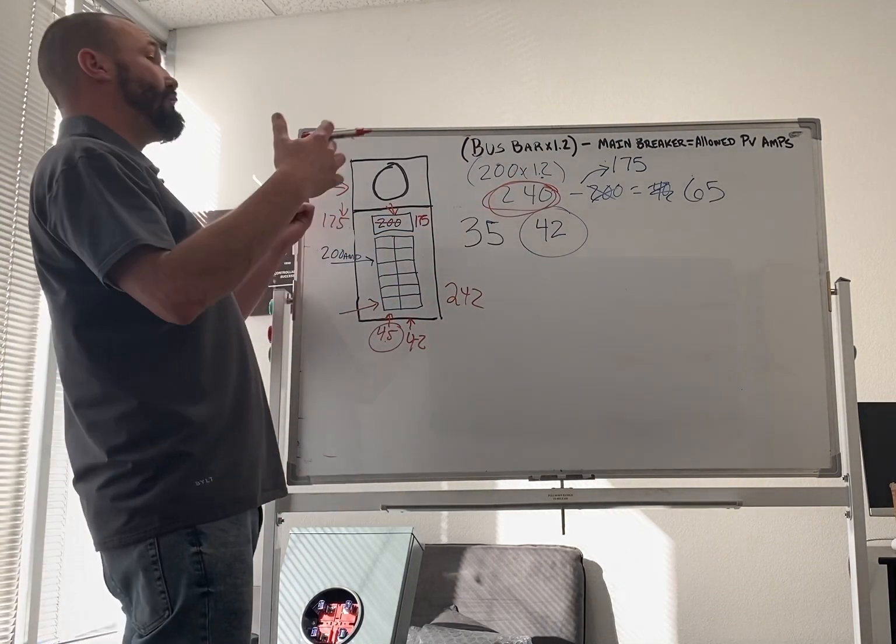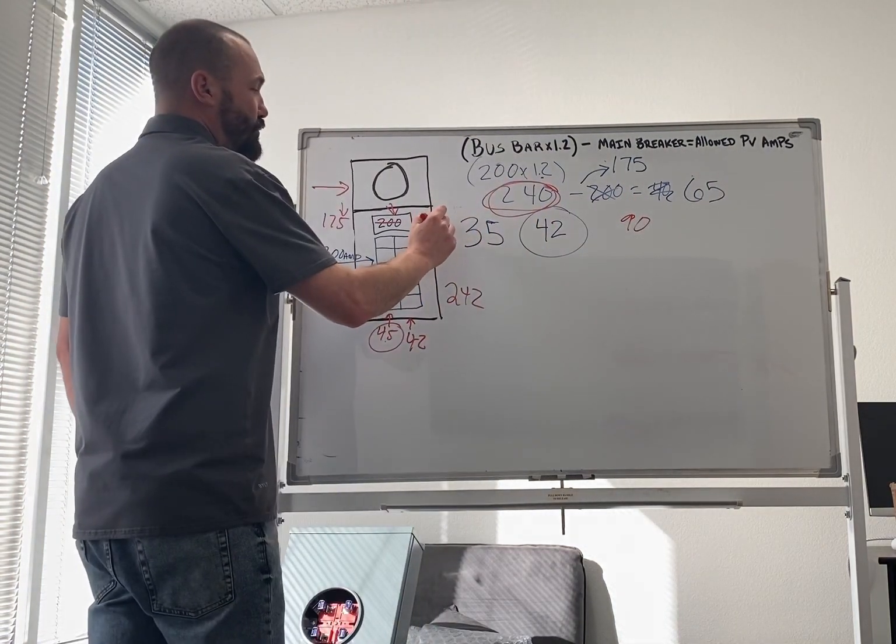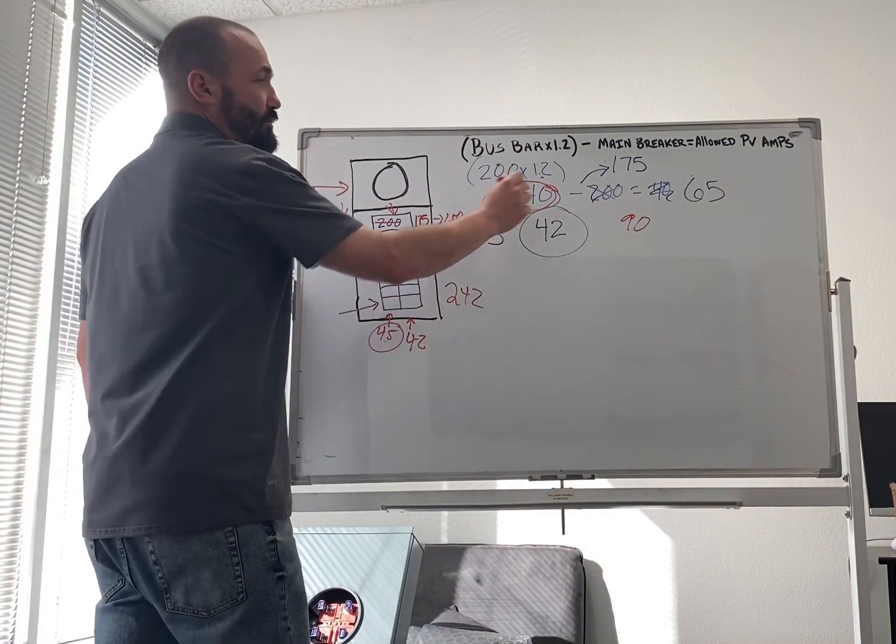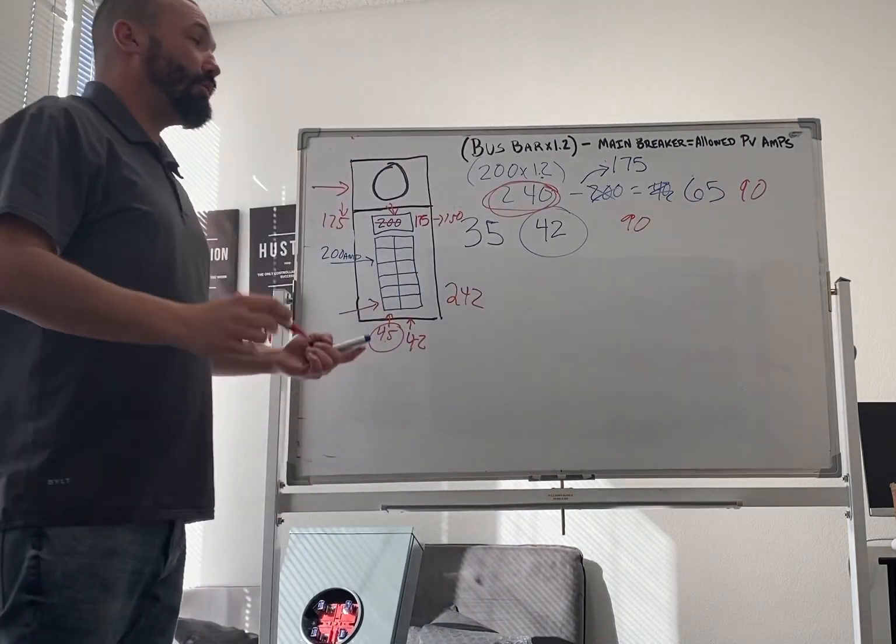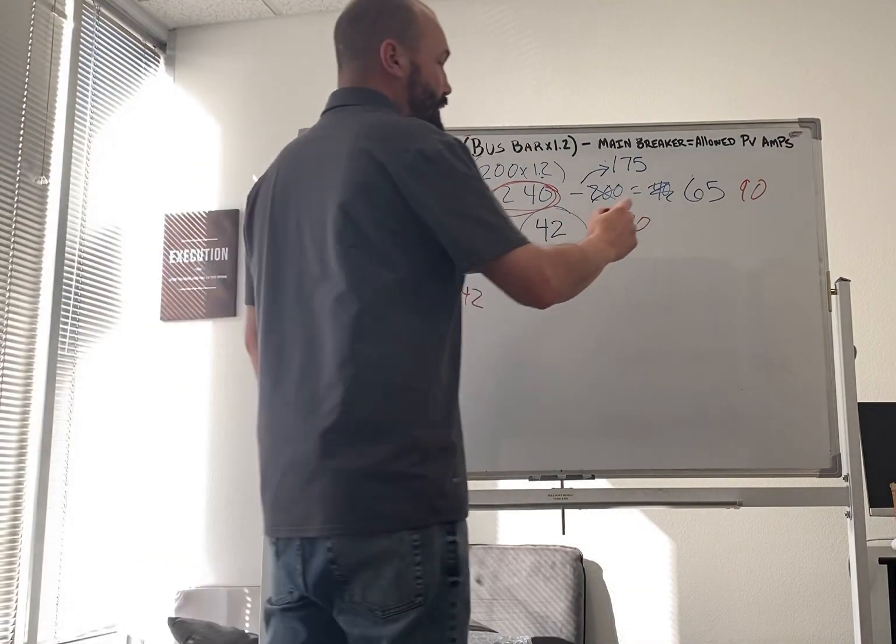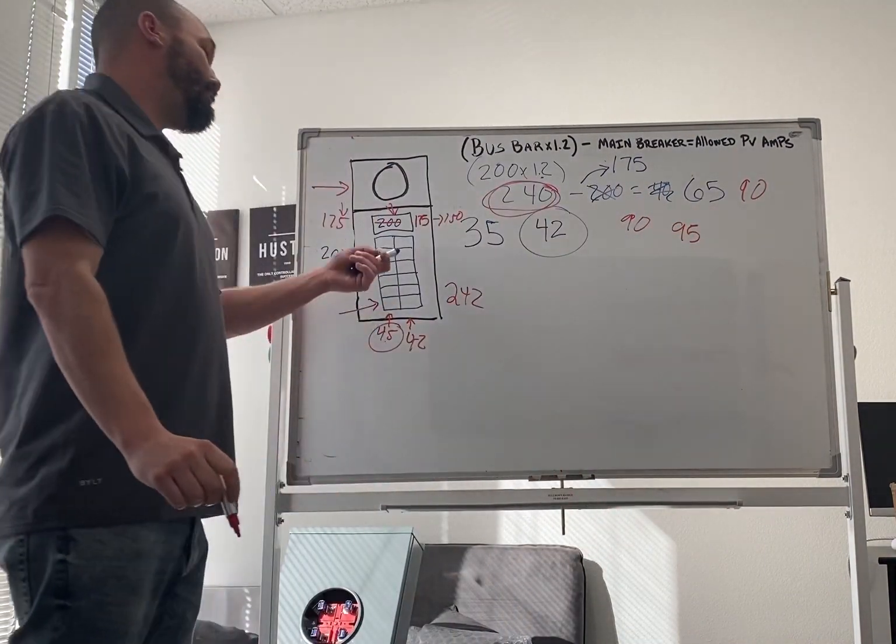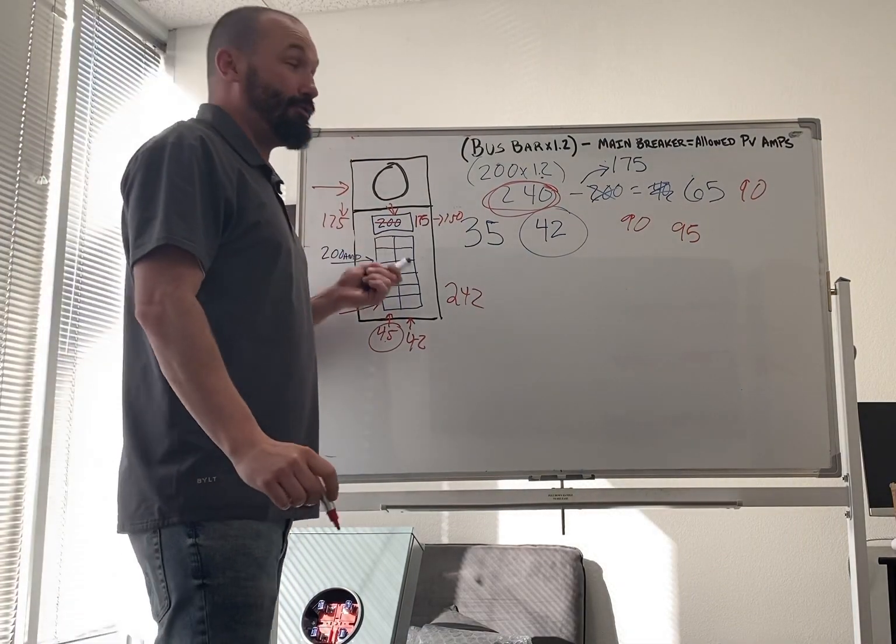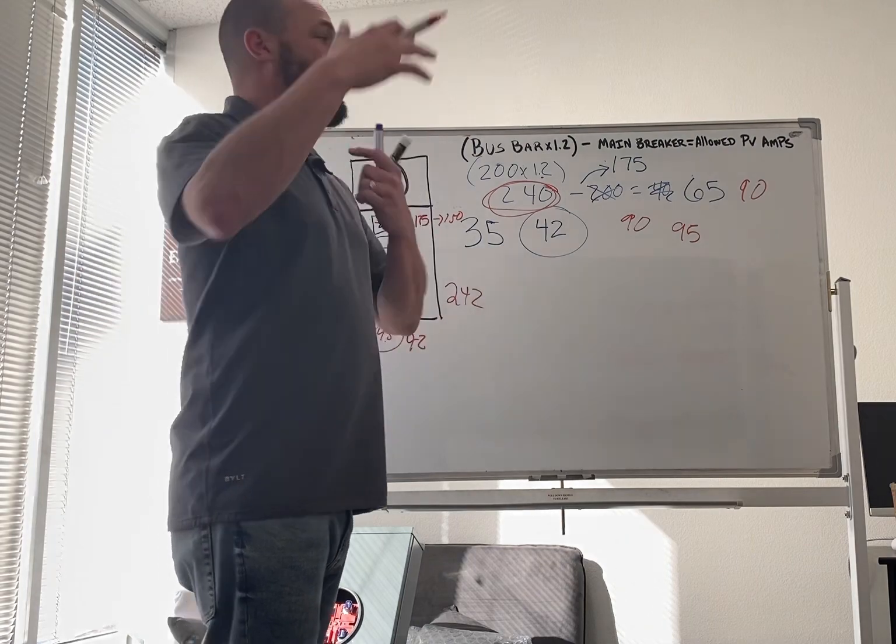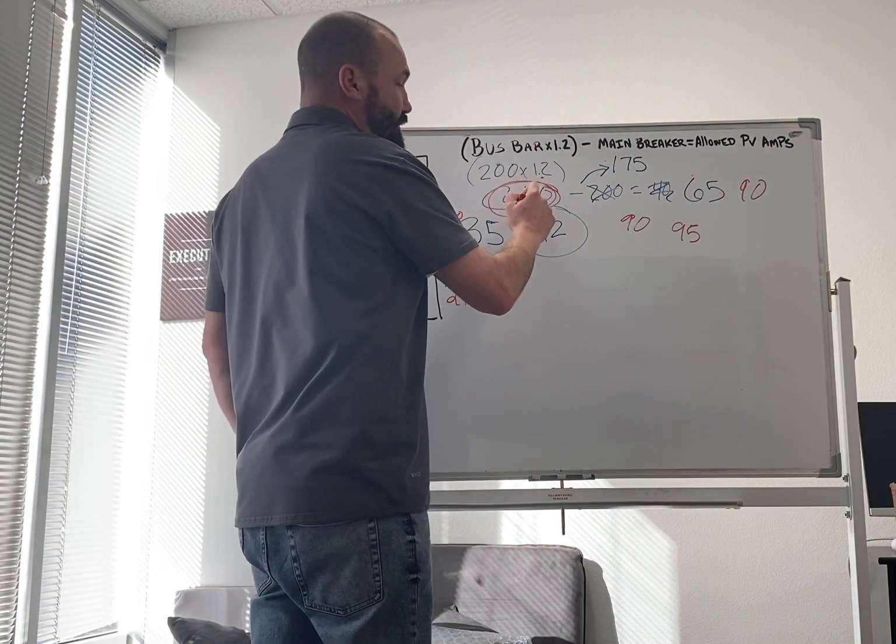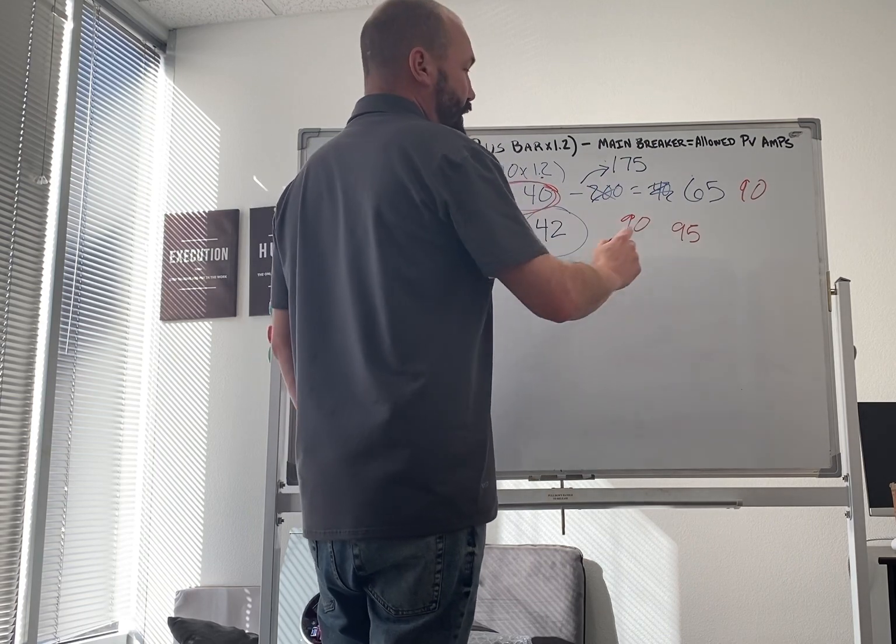So let's say it's even bigger, 90 amps, something like that. Well, I can derate this down to a 150. That will give me 25 more amps. Now I have 90 amps to backfeed. Well, what happens if your system is a 95 amp? Well, you better hope that this bus bar is a 225 because now 225 times 1.2, you're looking at 270 amps right here. That's going to give you another 30 amps to backfeed on top of your 150 amp breaker.